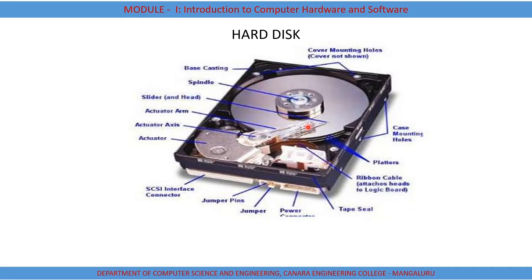To access the disk, a disk address has to be specified. The disk address represents the physical location of a record on the disk. To identify a particular location to read or write data, we first identify the sector number, then the track number, and then the surface number. Based on these, we can identify a particular location on the hard disk.